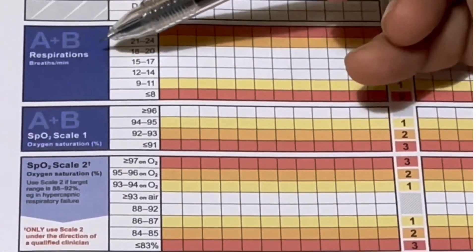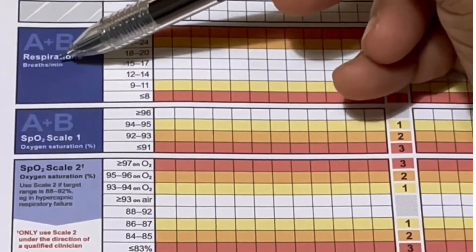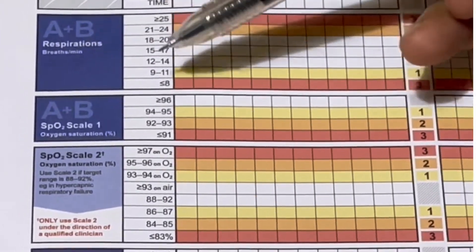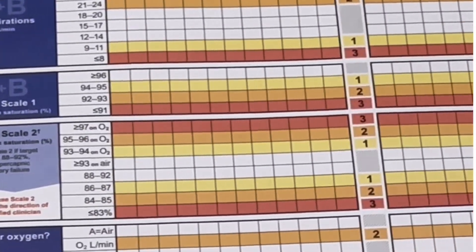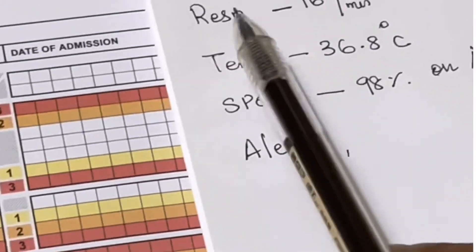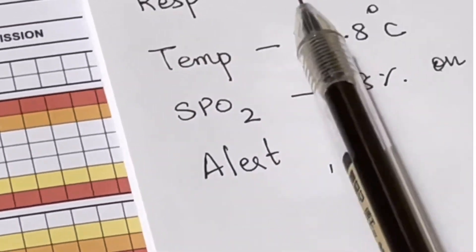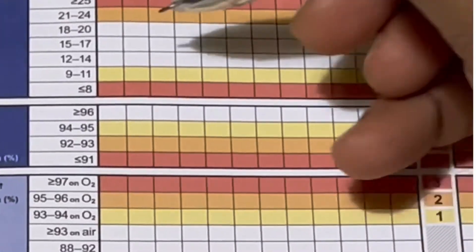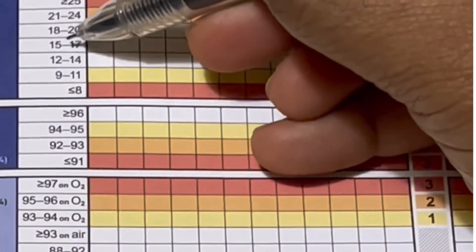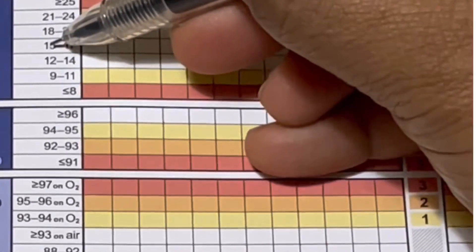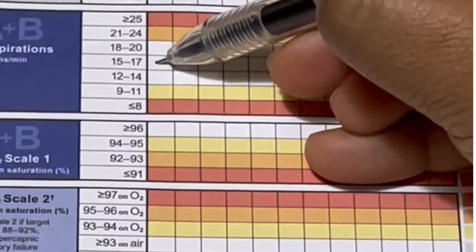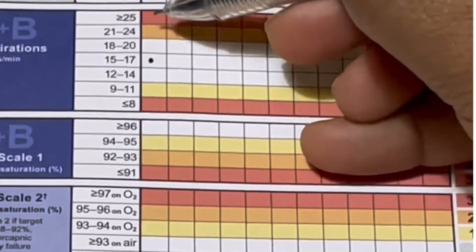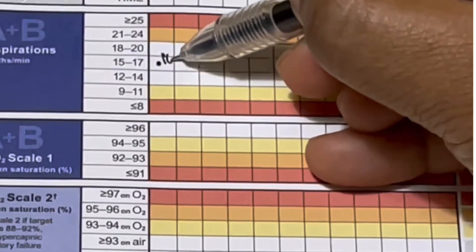The first observation is A plus B — respiration, that is breaths per minute. The respiration for our patient is 16 per minute. It falls between 15 to 17 on the chart, so we mark it as 16.